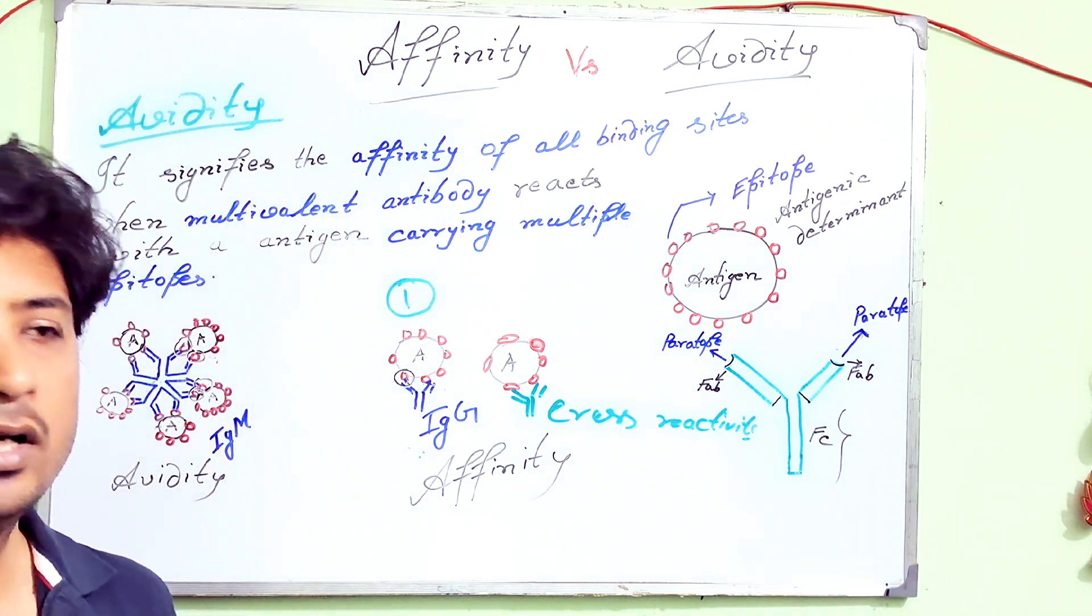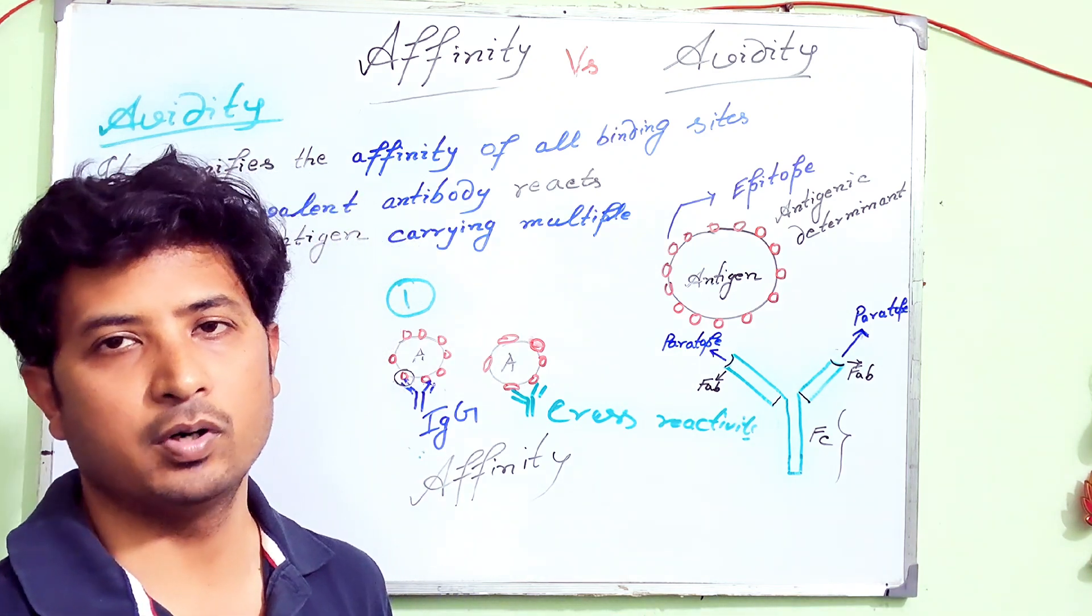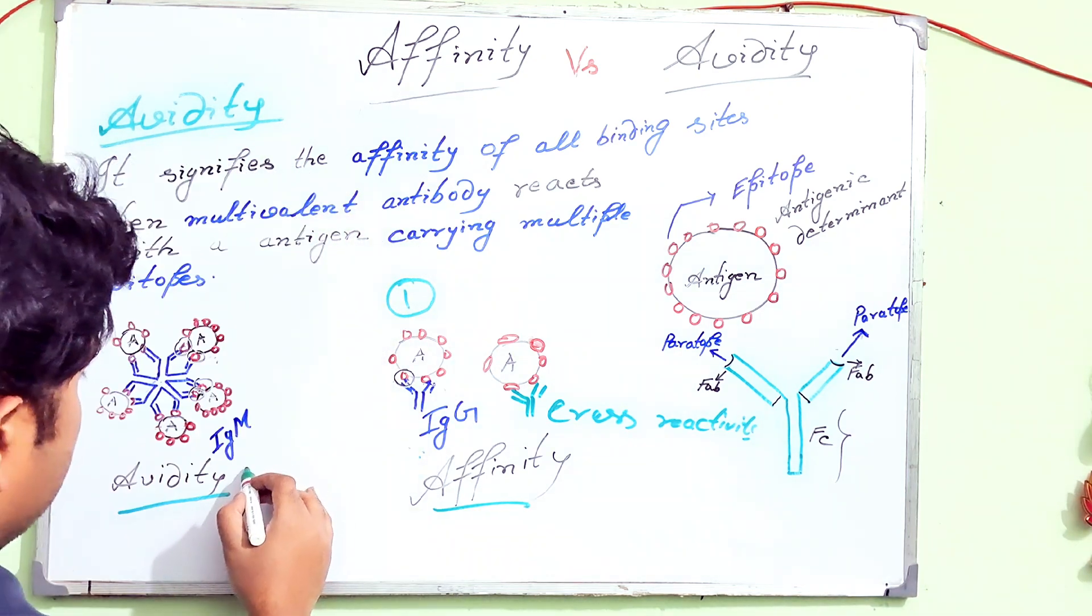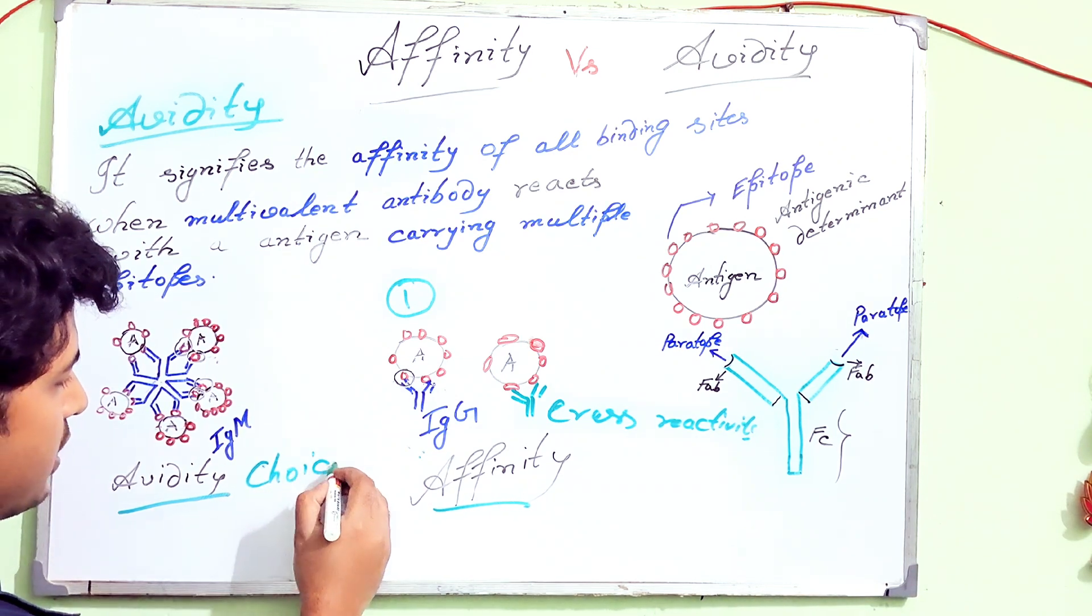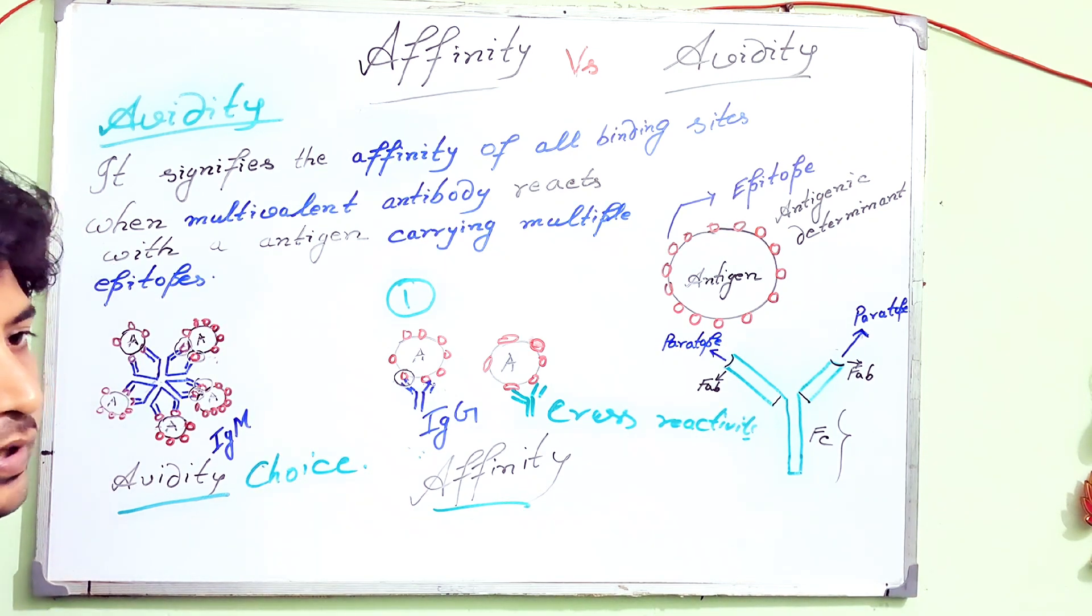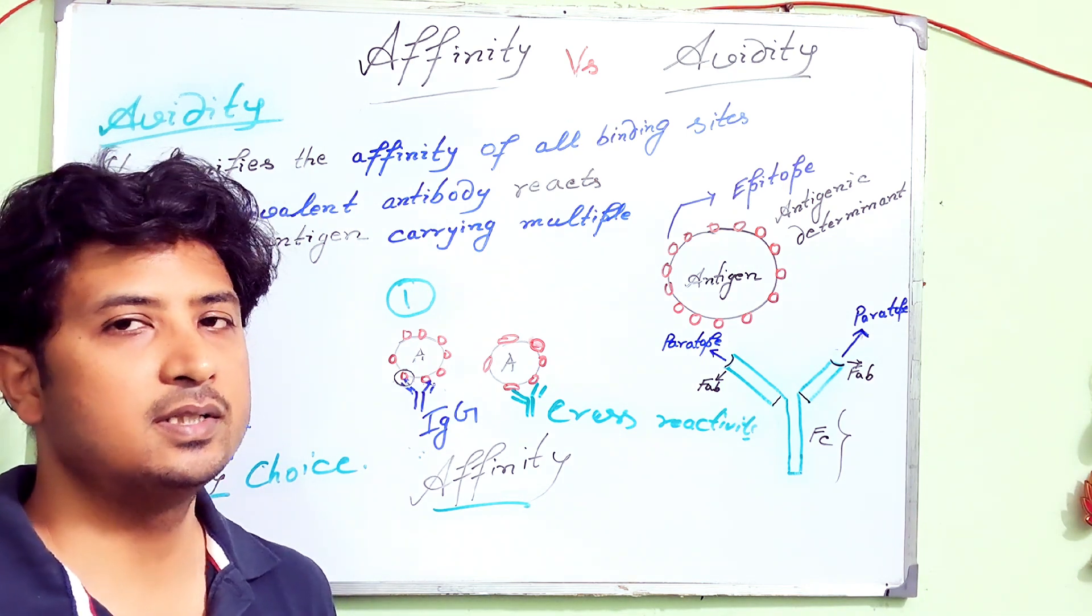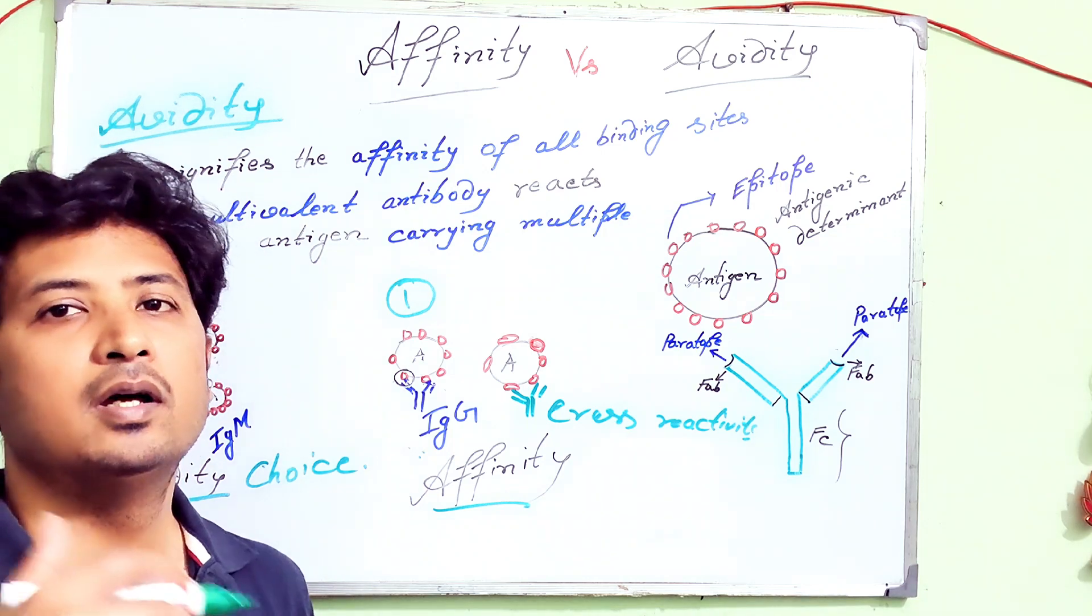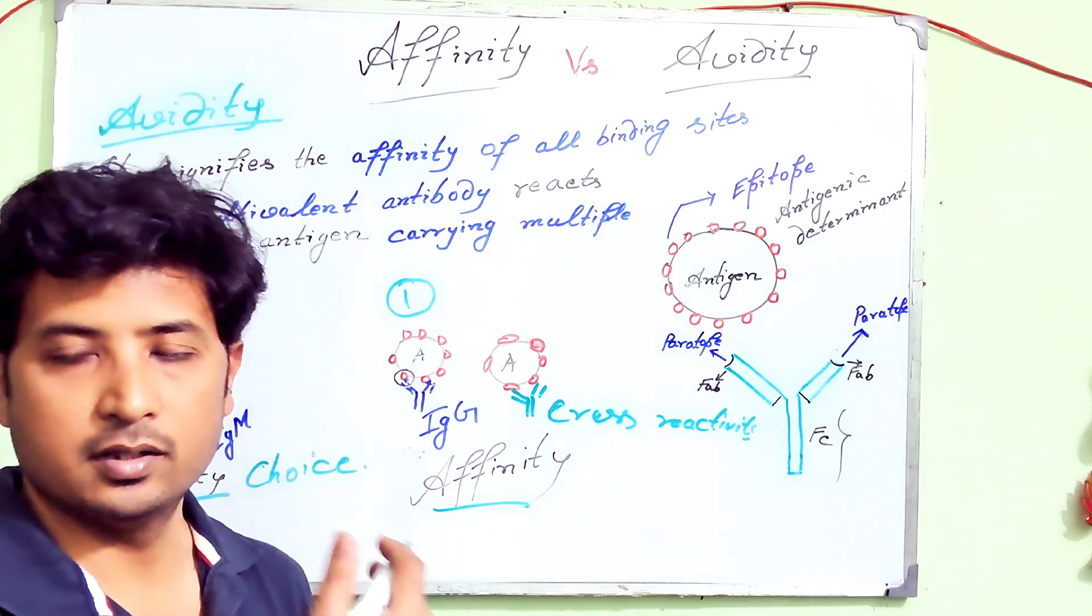Avidity, affinity, non-covalent interactions, and cross-reactivity all are very important. Avidity is much more the first choice for measuring the strength of an antigen-antibody reaction. That is why in a physiological condition, avidity will give you a more prominent result than affinity.